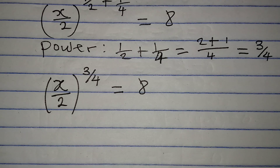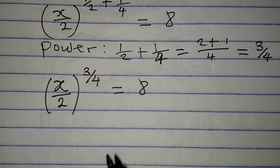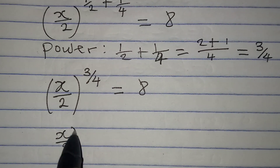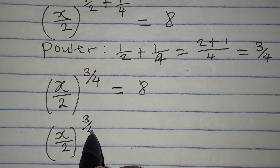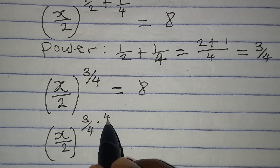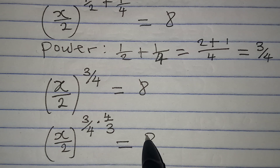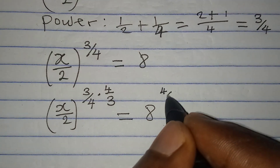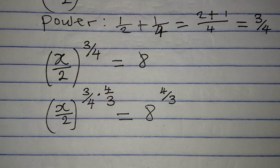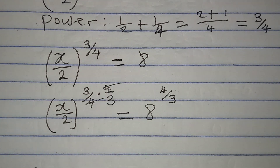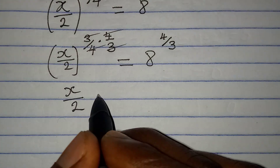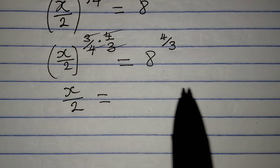From here I can remove this power by multiplying the power by its reciprocal. The reciprocal of 3 over 4 is 4 over 3. So I have x over 2 to the power of 3 over 4, then multiply by the reciprocal 4 over 3, equal to 8. The reciprocal on the left will reflect on the right-hand side, so I'll have 4 over 3 as the power of 8.